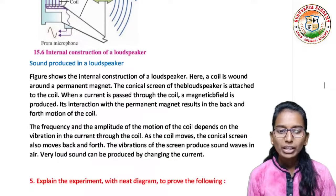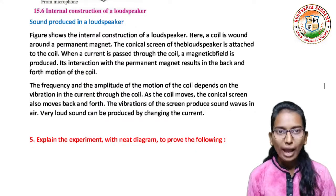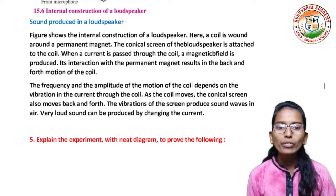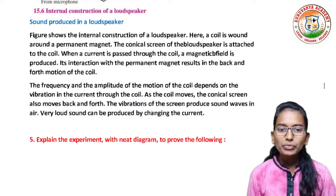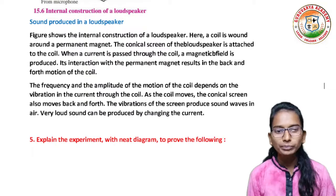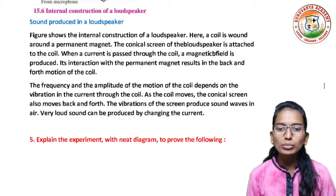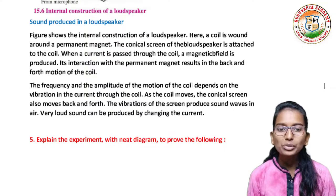The figure shows the internal construction of a loudspeaker. A coil is wound around the permanent magnet. The conical screen of the loudspeaker is attached to the coil. When the current is passed through the coil, the magnetic field is produced. Its interaction with the permanent magnet results in the back and forth motion of the coil. The frequency and amplitude of the motion of the coil depends on the vibration in the current of the coil. As the coil moves, the conical screen also moves back and forth. The vibrations of the screen produce sound waves in the air. Very loud sound can be produced by changing the current.